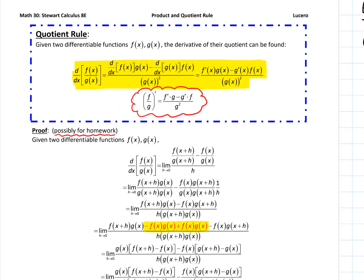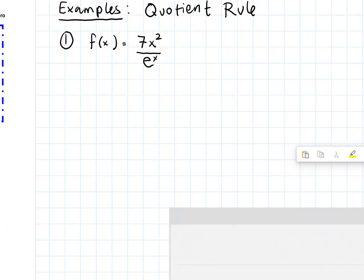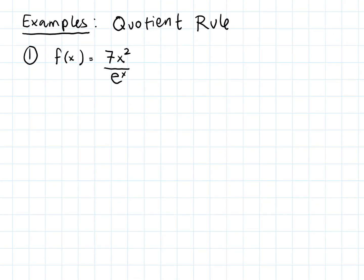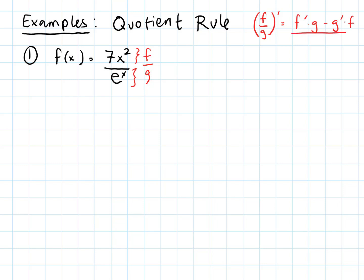Let's jump right into examples and practice with the quotient rule. Here are some quotients — let's apply the quotient rule to them. This is clearly a quotient: this is our f and our g. We're looking at a quotient of two functions, both of which we know how to differentiate — an exponential function in the denominator and a power function on top. Let me write the quotient rule here: f′·g minus g′·f over g squared.